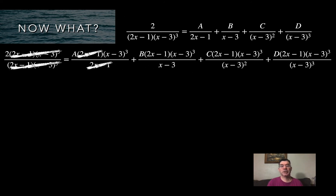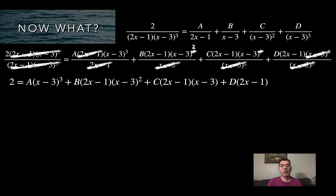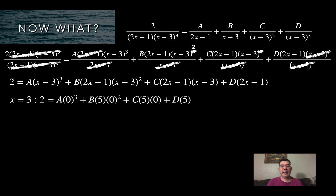After cancellation, in the last fraction all x minus 3 factors cancel, leaving just the 2x minus 1 factor and constant D. The important thing is all denominators are gone. Now I have an equation with no denominators and I can solve for A, B, C, and D. Again, I'm strategic about which x values I plug in.